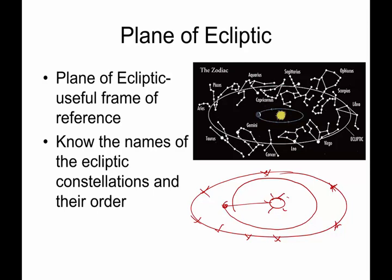I am going to request that you know the names of the ecliptic constellations, and you know them in order, so that you know which constellation comes after which. Now, there are 13 of them, and it can be very confusing.